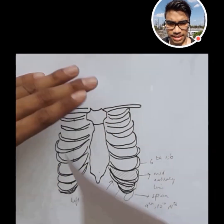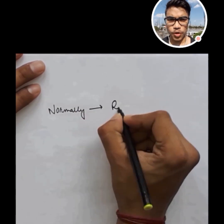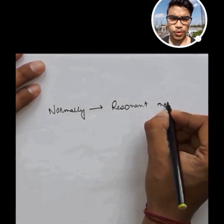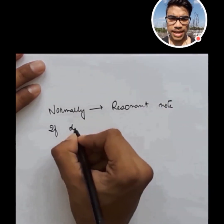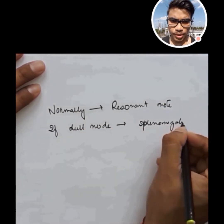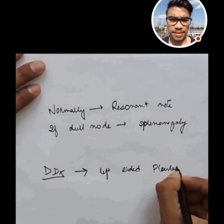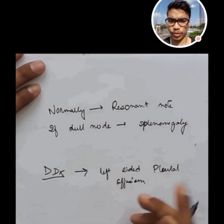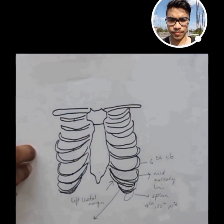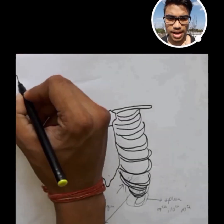We are going to percuss here. In the percussion, normally it is resonant. If we get a dull note, then we are pretty sure it is splenomegaly. Differential diagnosis can be left-sided pleural effusion. If we percuss and get dullness, the spleen is enlarged.